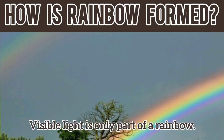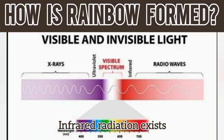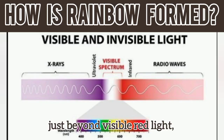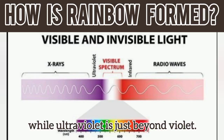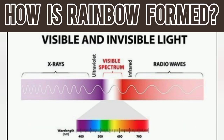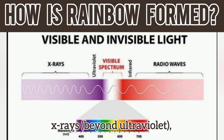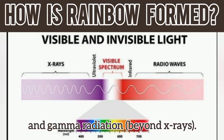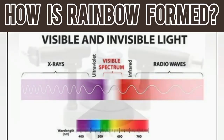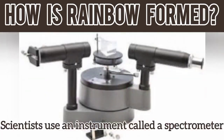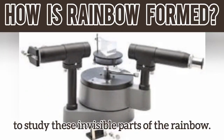Visible light is only part of a rainbow. Infrared radiation exists just beyond visible red light, while ultraviolet is just beyond violet. There are also radio waves beyond infrared, x-rays beyond ultraviolet, and gamma radiation beyond x-rays. Scientists use an instrument called a spectrometer to study these invisible parts of the rainbow.